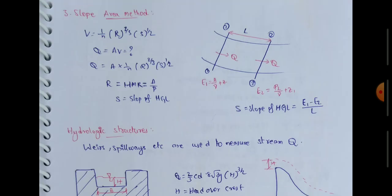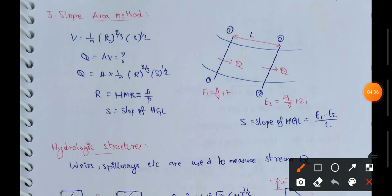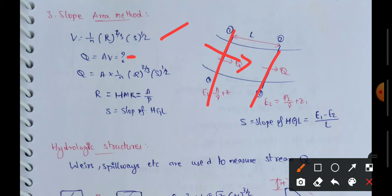The third method is the slope area method. We consider section 1 and section 2, and find discharge Q equals A into V. We substitute the V value using the hydraulic mean radius (HMR), where HMR equals wetted area divided by wetted perimeter.